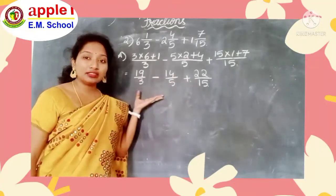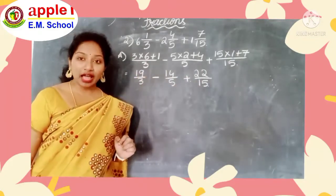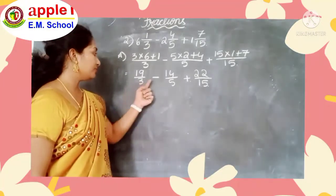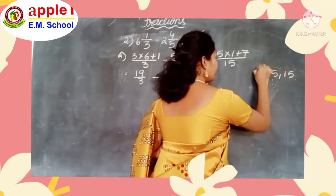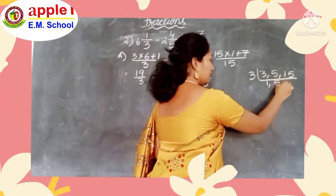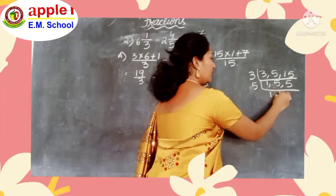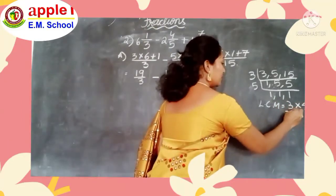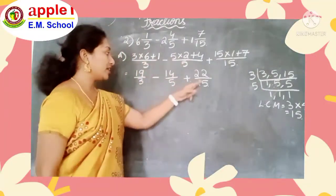These are also unlike fractions, so we have to convert them into like fractions by finding the LCM. What is the LCM for 3, 5, and 15? We do the 3 times table: 3 divides 3, 5, 15 giving 1, 5, 5. Then 5 divides giving 1, 1, 1. So the LCM is 3 into 5 equals 15. The LCM is 15. So make all the denominators 15.